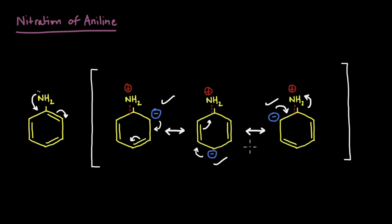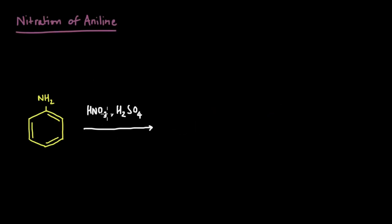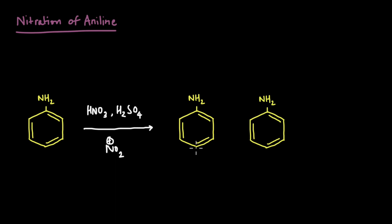Based on this information, we know that when we have an electrophile E+ in the reaction, it will probably attach at the ortho and para positions. So when we use our nitrating mixture to generate the NO2+ electrophile, and knowing that the NH2 group activates the ring with higher electron density at ortho and para, we expect NO2 to attach at the para position and also at the ortho position.